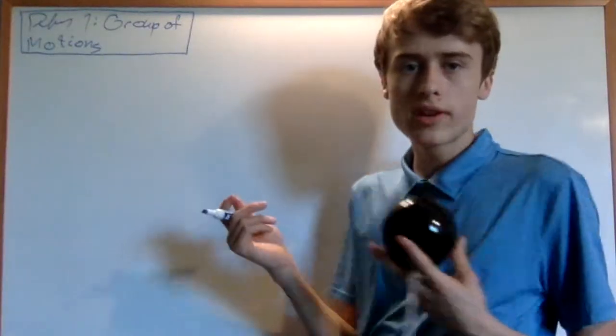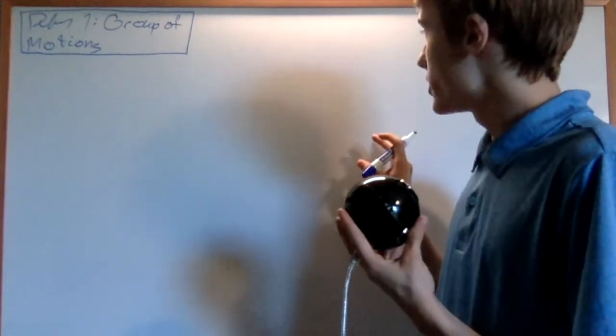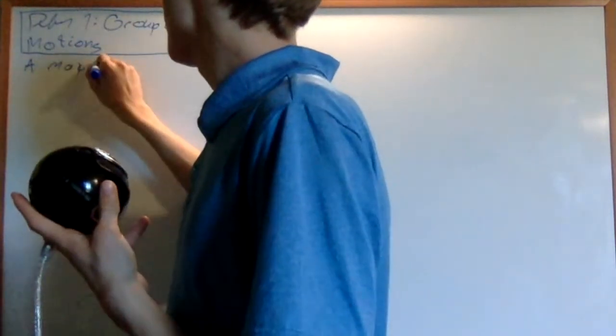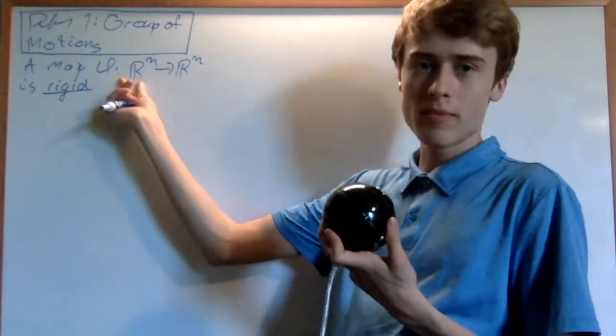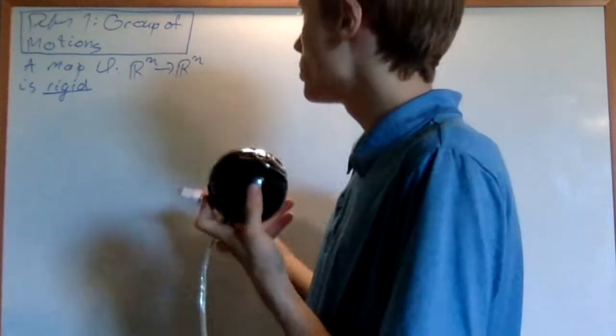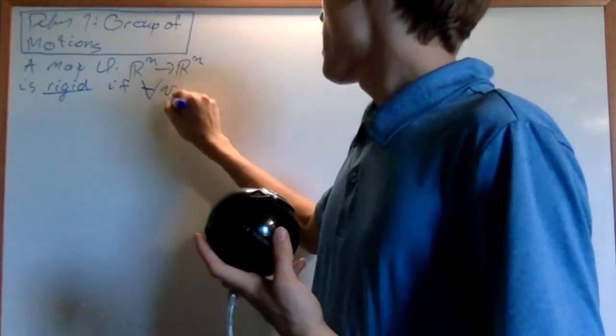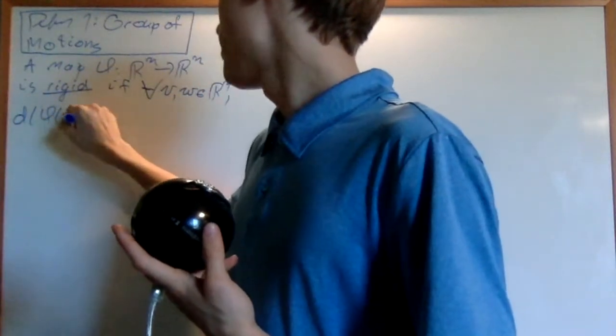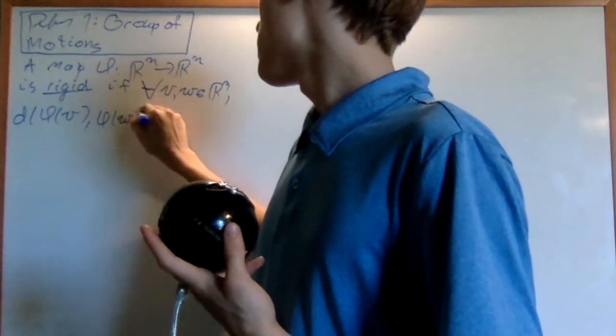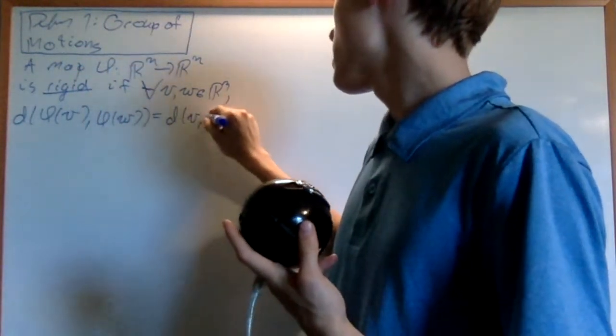The group of motions is going to be the group of all rigid motions, or transformations that preserve distances. So this is going to be a map phi from Rn to Rn that is rigid. This is a map that takes in some n-dimensional vector and outputs an n-dimensional vector. It's going to be called a rigid motion if, for every V and W in Rn, we have that the distance between phi of V and phi of W is equal to the distance between V and W.